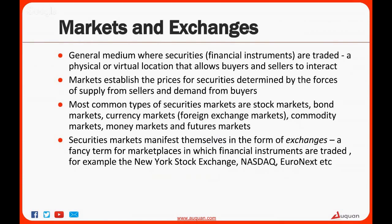So how does a trade really take place? First, let me introduce you to the term markets. Very broadly, markets are the medium where securities or financial instruments are traded — a physical or virtual location that allows buyers and sellers to interact. The prices for these securities are determined by forces of demand and supply; the equilibrium point where these forces meet is the price for that security. The most common types of securities markets are stock markets, bond markets, currency markets, commodity markets, money markets, and so on. These security markets manifest themselves as exchanges. An exchange is simply a marketplace in which financial instruments are traded — it matches buyers and sellers and facilitates trades between them. Some common examples are the New York Stock Exchange, the NASDAQ, Euronext, NSE India, and so on.